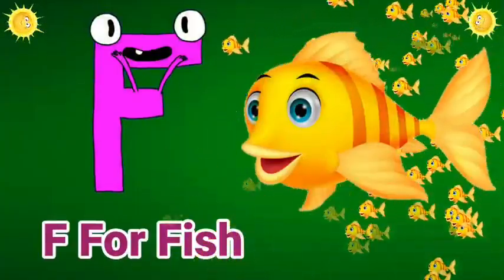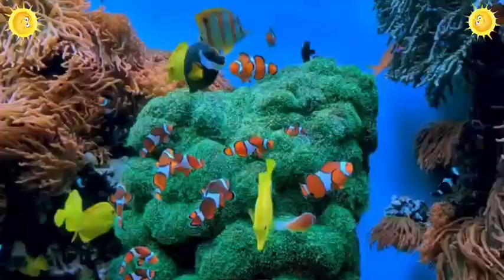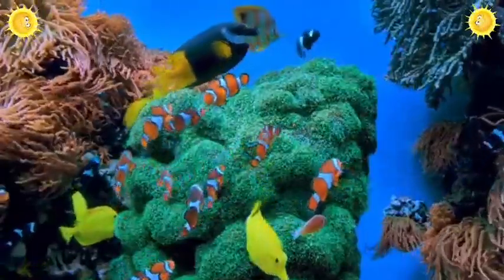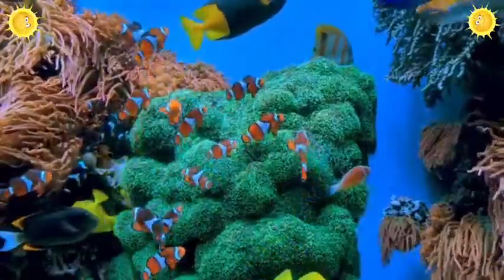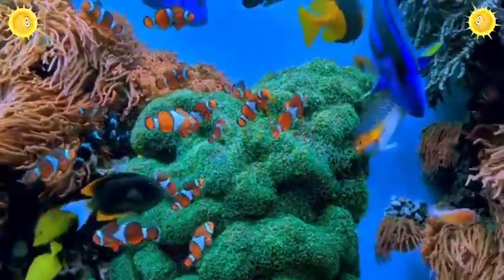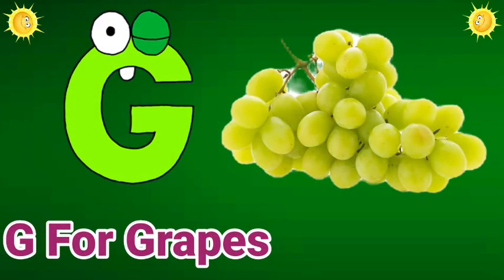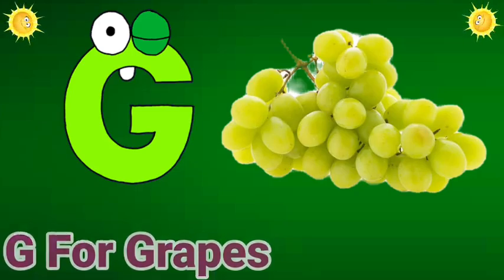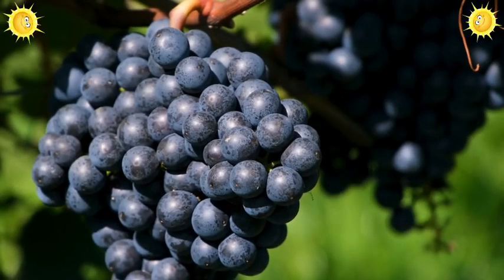F for fish. Fish means natchli. G for grapes. Grapes means angor.